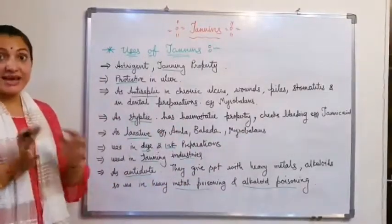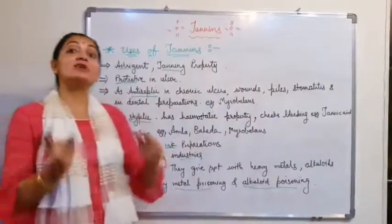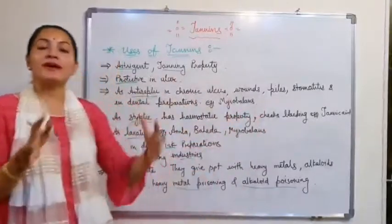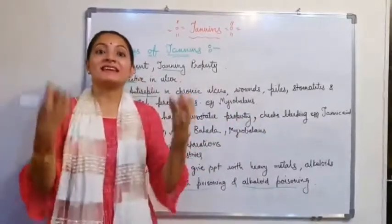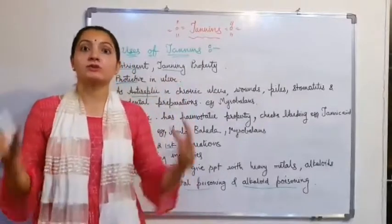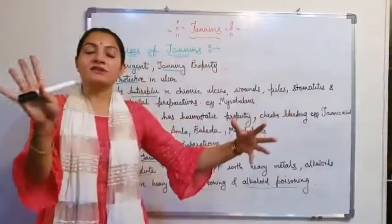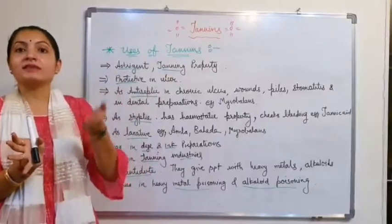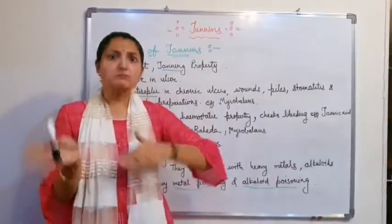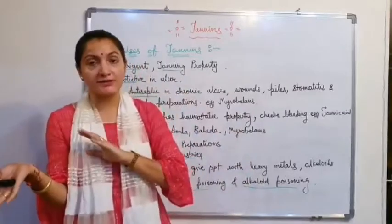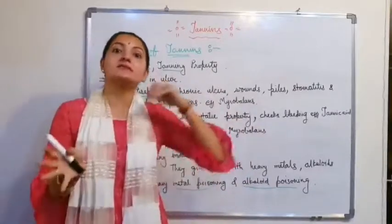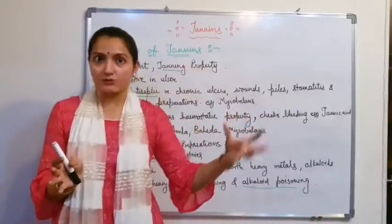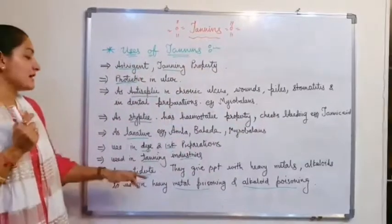Seventh use is as an antidote, because tannins give precipitates of heavy metals. When a person has heavy metal poisoning or alkaloid poisoning due to ingestion of large amounts of heavy metals or alkaloids, tannin is used as an antidote because in the presence of tannin, the heavy metals or alkaloids are precipitated out.